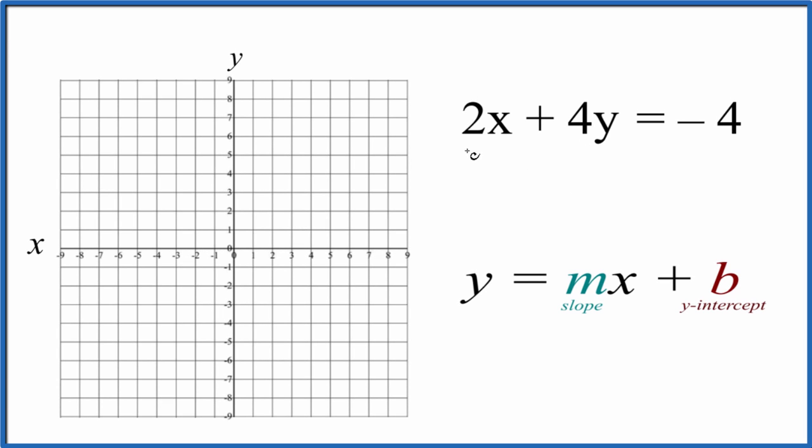Let's graph the linear equation 2x plus 4y equals negative 4. We'll use slope-intercept form to do that.